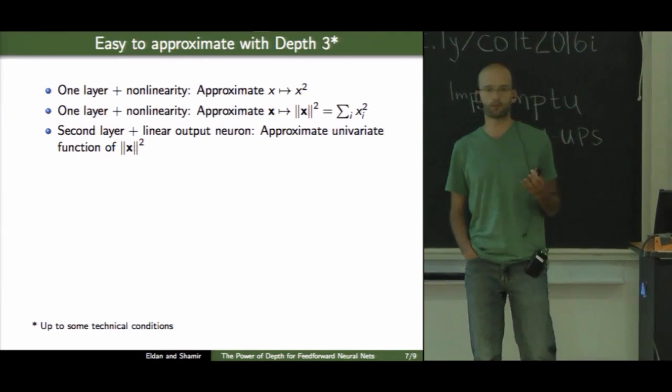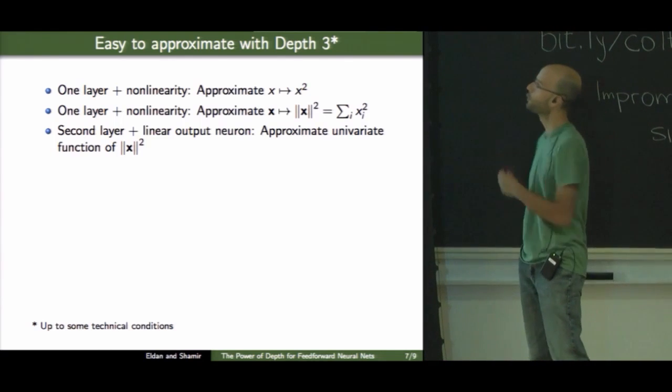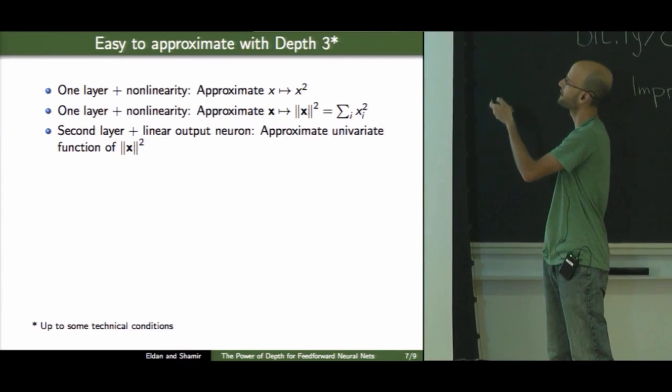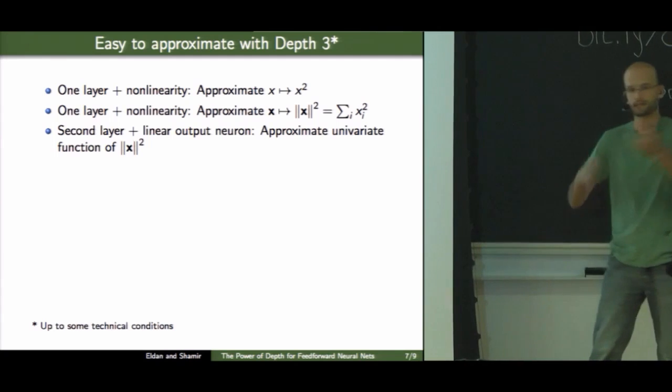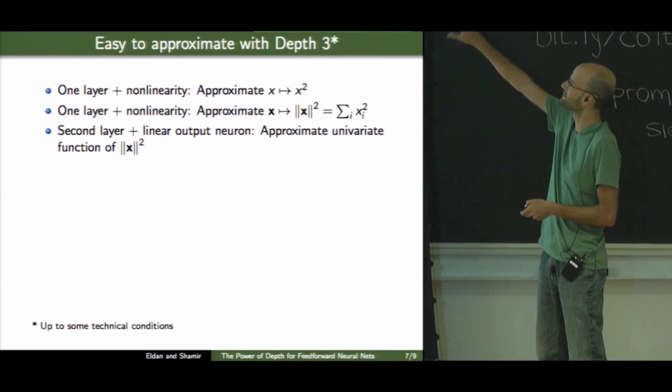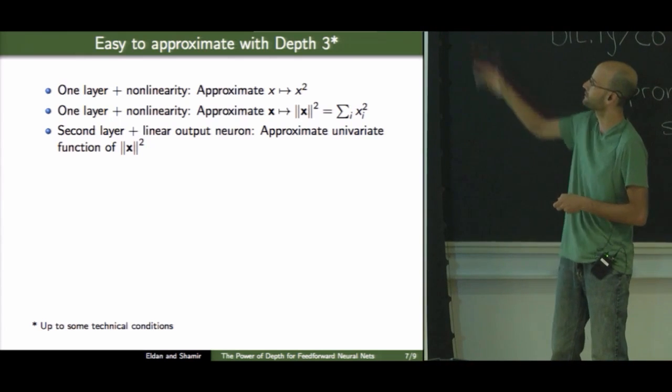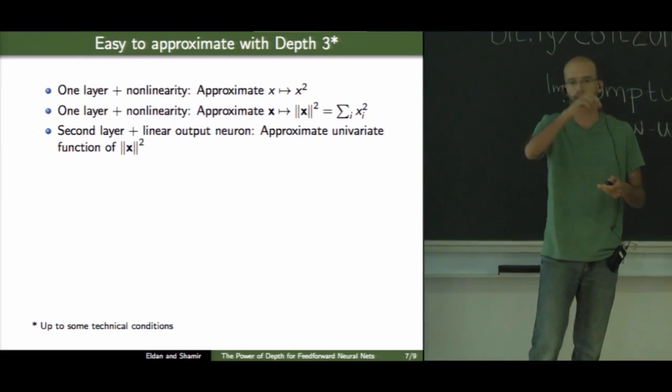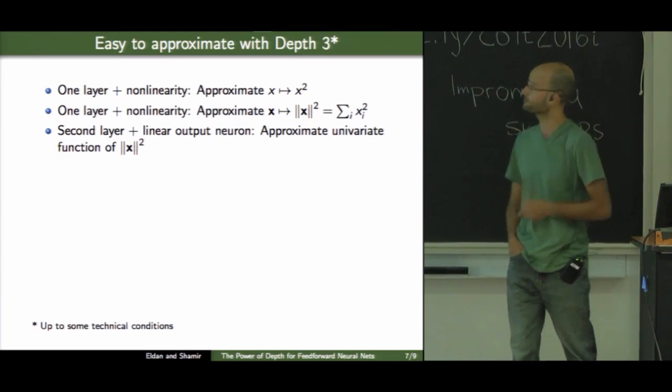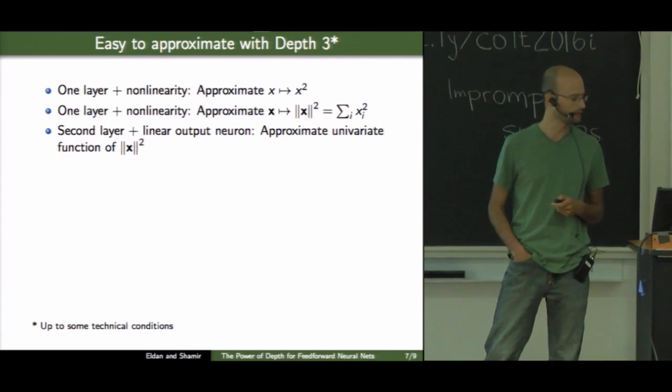So, on one hand, radial functions are easy to approximate with depth-free networks. The basic idea is that with one layer plus a nonlinear activation, you can approximate the univariate function x mapping to x squared, at least in some bounded interval. And now, if I have a d-dimensional input, I just sum this up over all the dimensions so I can compute the squared norm. And now, on top of that, I use another layer to compute some univariate function of the squared norm. So that's how I approximate radial functions.